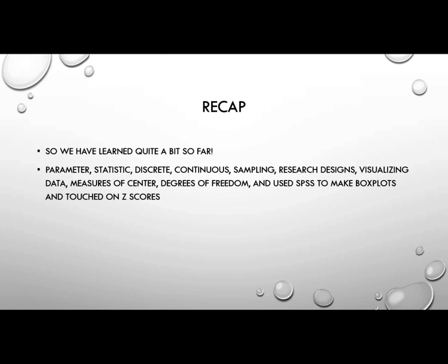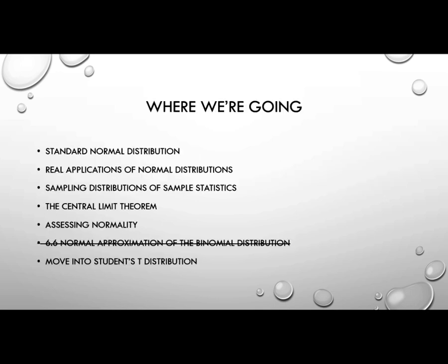So let's recap. We've learned quite a bit so far. We've talked about parameters and statistics, discrete and continuous data, different types of sampling and research designs. We've visualized data, looked at measures of center, talked a little bit about degrees of freedom, and we've used SPSS to make box plots and touched on Z-scores, amongst other things. So where are we going?